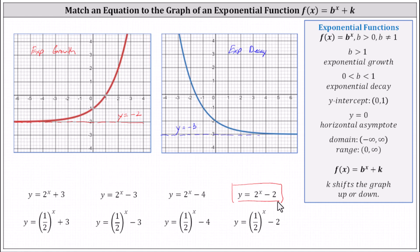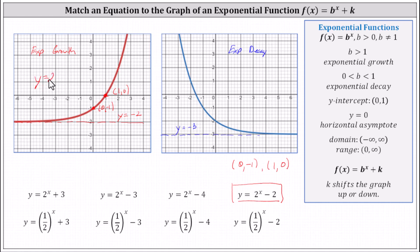Let's verify this by determining two points on the red graph. Let's use the x-intercept at (1, 0) and the y-intercept at (0, -1). Looking at y equals two to the power of x minus two: when x equals zero, y equals two to the zero minus two, which is one minus two, or negative one. When x equals one, y equals two to the first minus two, which is two minus two, or zero. Both points are on the graph, verifying the correct equation. Let's label the graph as y equals two to the power of x minus two.